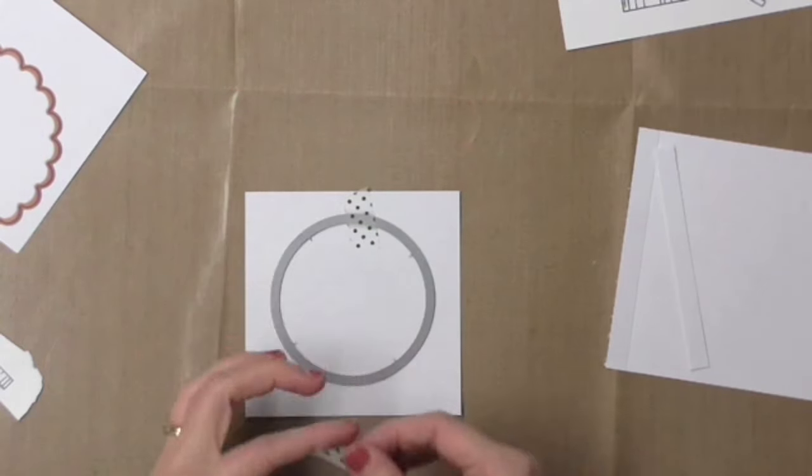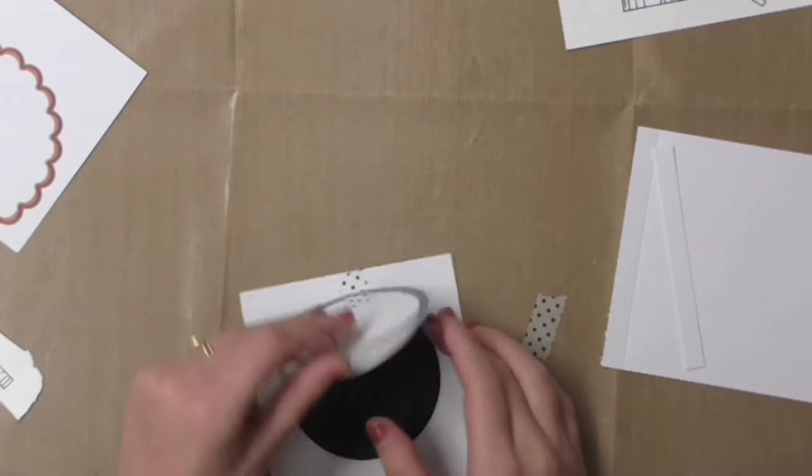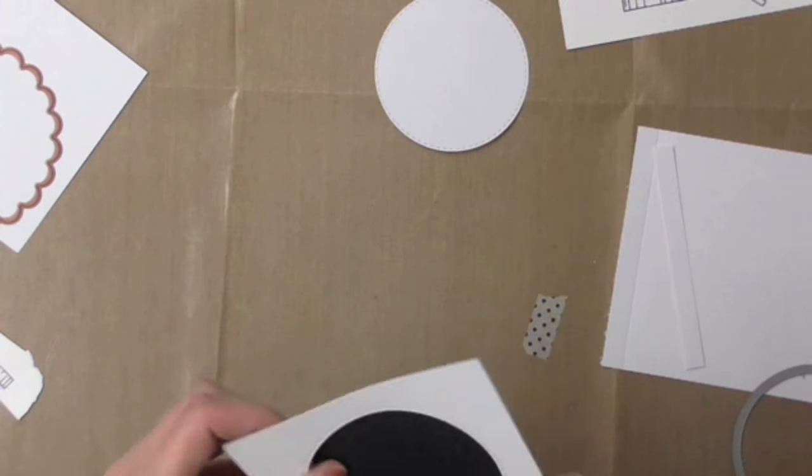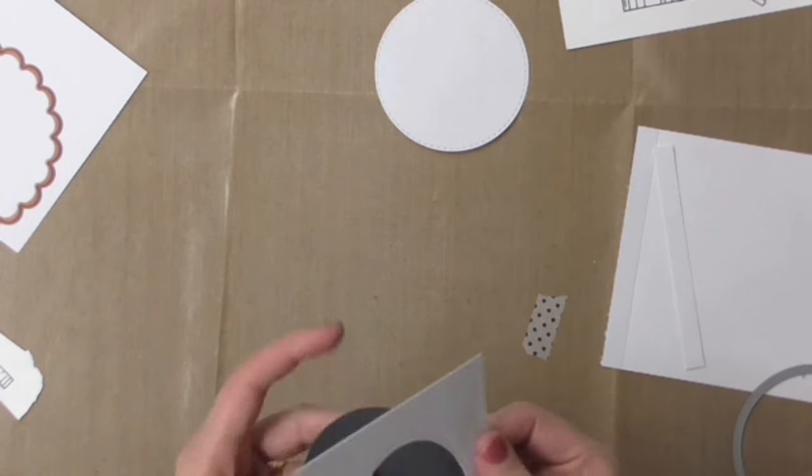It's about a four inch piece of square card and then I ran that through the cuttlebug using my stitched circle die from Simon Says Stamp.